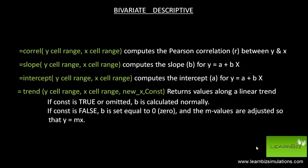The trend function takes four arguments: the y cell range, the x cell range, the new x, and a constant. If the constant is true or omitted, the b is calculated normally. If the constant is false, b is set equal to zero and the m values are adjusted so that y is equal to mx.